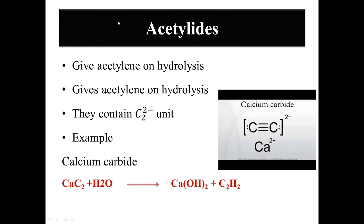Next are acetylides. Acetylides are ionic carbides that produce acetylene on hydrolysis. They contain a C₂²⁻ unit — two carbon atoms jointly sharing a 2− charge. The classic example is calcium carbide (CaC₂). When hydrolyzed, calcium carbide produces C₂H₂, which is acetylene. In the structure, the two carbon atoms carry the 2− charge as the characteristic unit of acetylides.